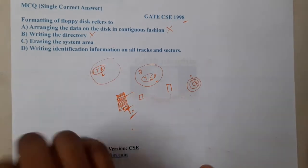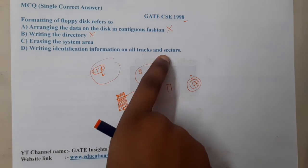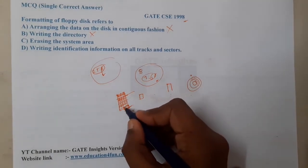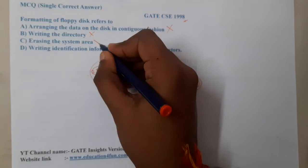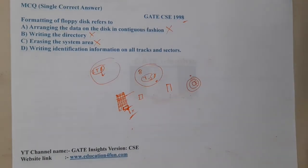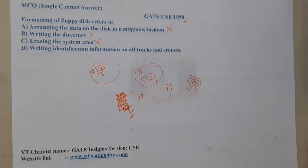Option C says 'arranging the system area,' which is also wrong, because the system area — the metadata I mentioned — is actually not erased during formatting; it is preserved. Option D says 'writing identical information on all the tracks and sectors.' This is the one to consider.